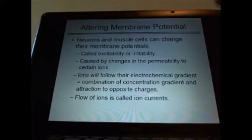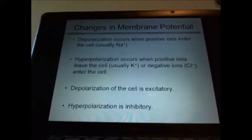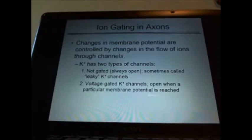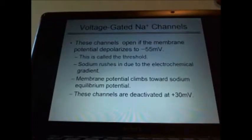Know about excitability or irritability. The gradient, the flow. When the channel is open, what flows in, what flows out — by diffusion. Know about membrane potential: polarized, depolarized, repolarization, hyperpolarization. What happens in depolarization? What happens in hyperpolarization? Excitatory or inhibitory. Ion gates — what opens? What goes in? What goes out? Potassium goes out, sodium flows in — it depolarizes, it changes the membrane potential. The resting membrane potential is about minus 70; it goes up to about minus 55, and then you have the action potential. Know about the gates — voltage gates, chemical gates. Know what a threshold is.